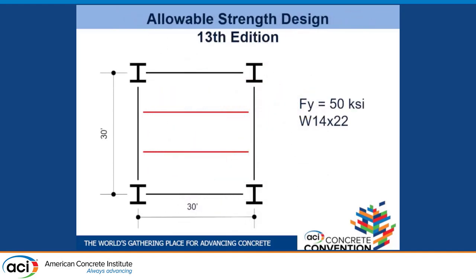To look at the impact of the differences between allowable stress design and LRFD, consider a typical 30-by-30 bay with beams at 10 feet on center, looking at secondary beams carrying typical office building loads — mechanical, electrical, 20 pounds of partitions. The design solution using grade 50 steel under allowable stress design is a W14x22. The dead load deflection of that solution would be a little over an inch and a half.